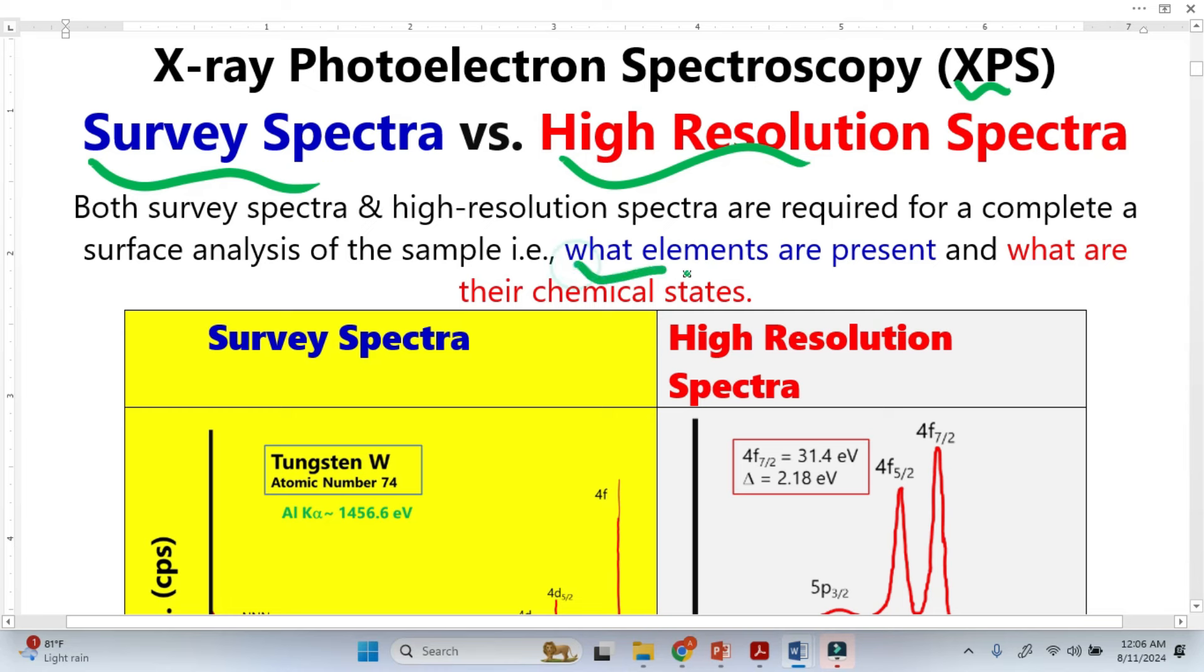If the elements are unknown, we have to run survey spectra. High resolution spectra gives us information about the chemical state. Chemical state basically means the oxidation states, the surrounding environment.